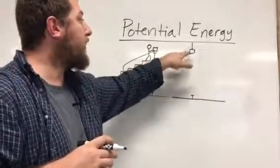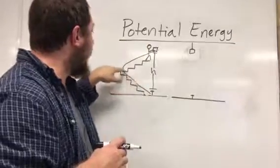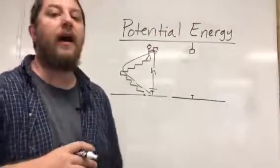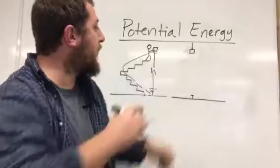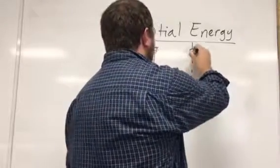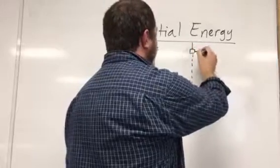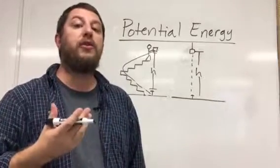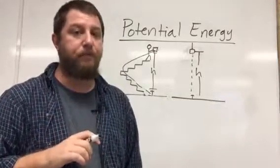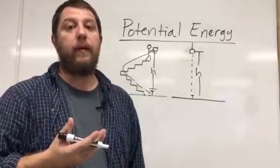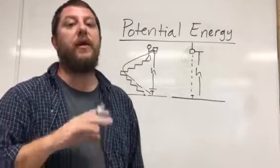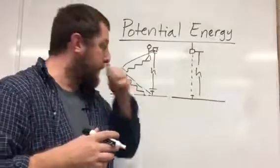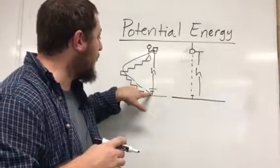Now imagine a similar scenario: instead of bringing the brick up the staircase, a crane lifts the brick straight up over the nail to the same height H. Which brick has had more work done to it? As a matter of fact, the works are equal, and this is because the gravitational force is conservative — it doesn't matter what path the object takes.